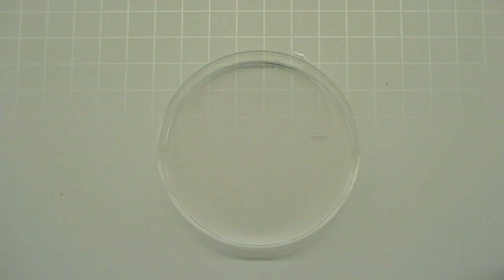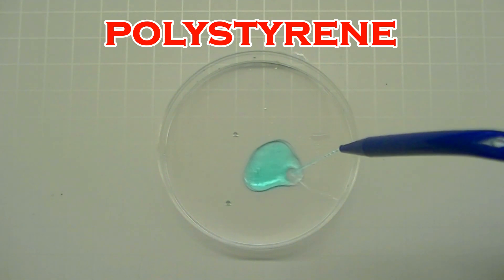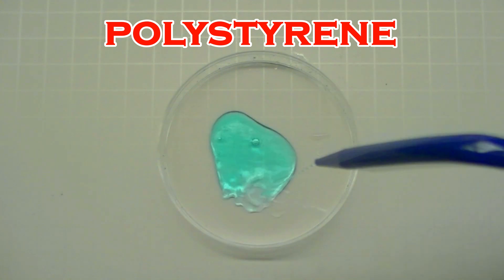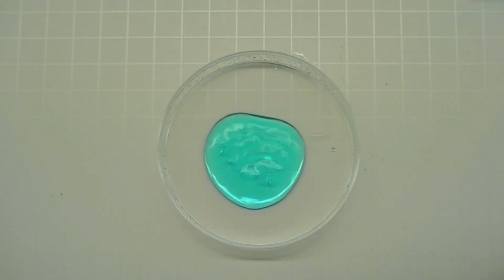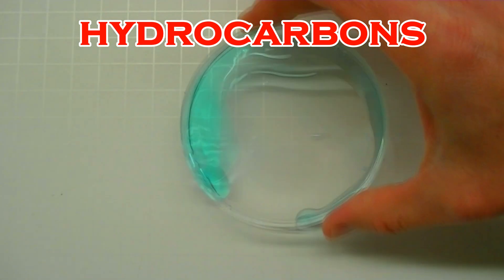The plastic dish used in these experiments is made of polystyrene which is a substance that is made of only carbon and hydrogen atoms. Compounds made of only carbon and hydrogen are called hydrocarbons and hydrocarbons do not mix easily with water.